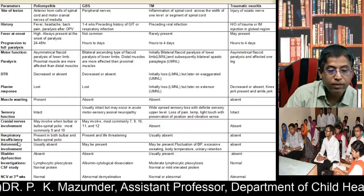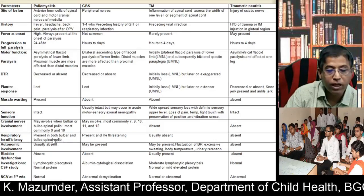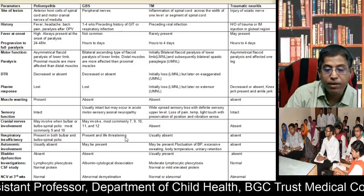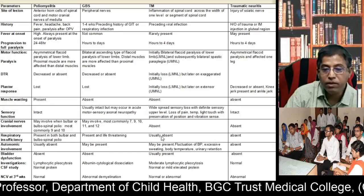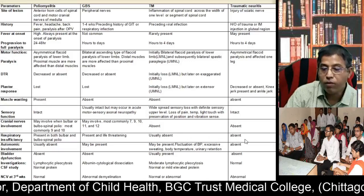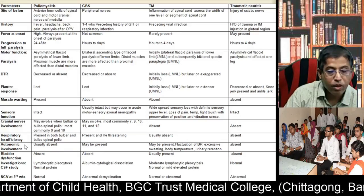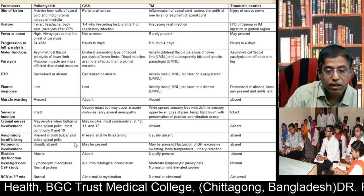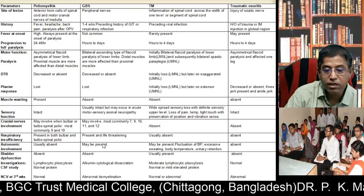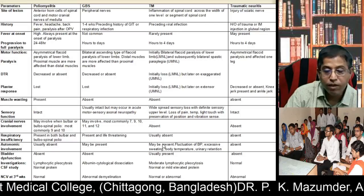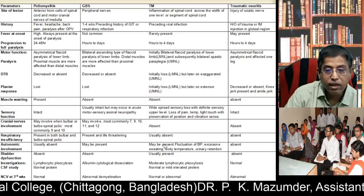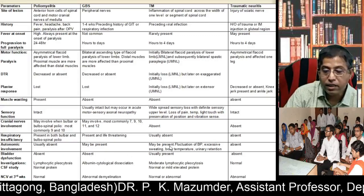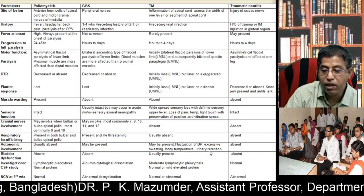Respiratory insufficiency: present in both bulbar and bulbospinal polio. In GBS it is present and life-threatening. In transverse myelitis, usually absent. In traumatic neuritis, absent. Autonomic involvement: usually absent in poliomyelitis. May be present in GBS. Usually absent in transverse myelitis. In GBS, autonomic features include fluctuation of blood pressure, excessive sweating, body temperature changes, and urinary retention.